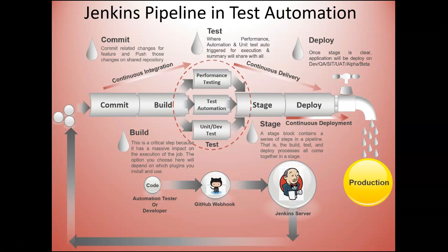The CI method ensures that bugs can be found and fixed early in the development process. When you use test automation with CI, it also ensures that builds are consistent. Continuous integration is a game changer for increasing the adoption of test automation at every step of the software development process. CI adoption brings various opportunities and requires an additional professional role known as the test automation engineer. In this video, we will describe how CI affects the working day from a test automation engineer's point of view and the achievable benefits of continuous integration.